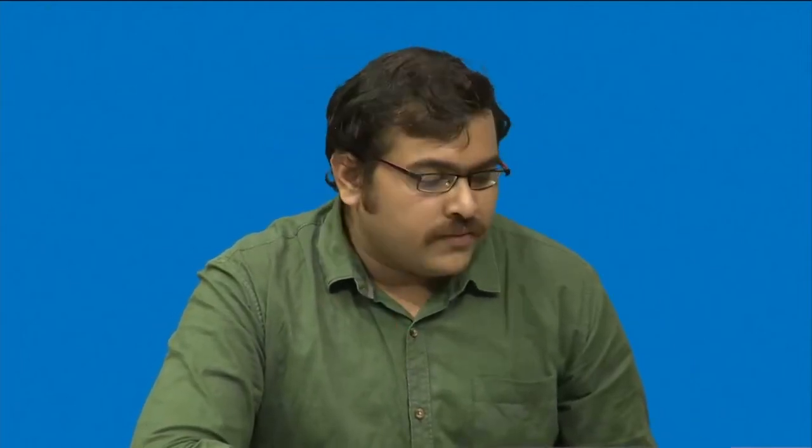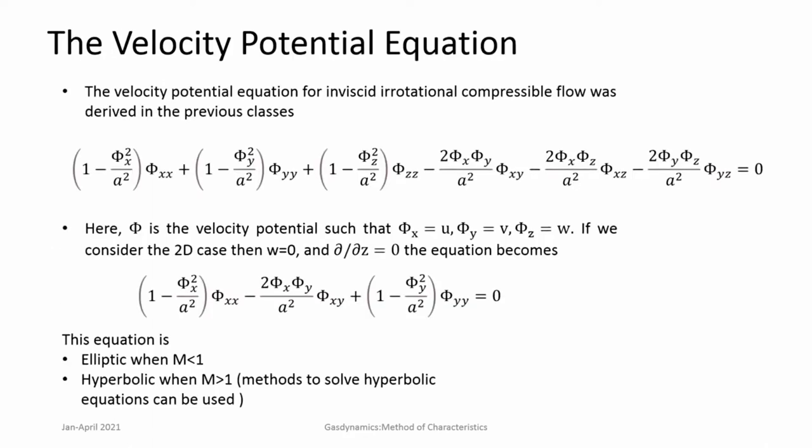Now, if you really want to solve the flow fields, it is involved and it is not very easy to do it analytically. But in supersonic flows, because of their hyperbolic nature and they have the characteristic that information propagates in certain directions, which are known as the characteristic lines, we can use the method of characteristics, which is used typically in any hyperbolic equation. It is a method to solve hyperbolic partial differential equations — in short, it is also called MOC, method of characteristics.